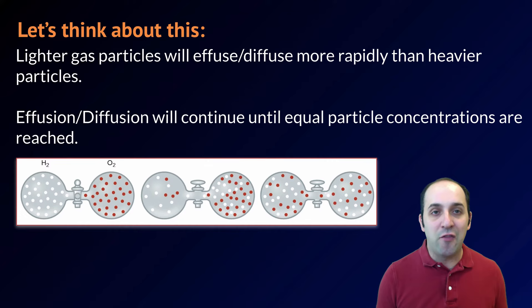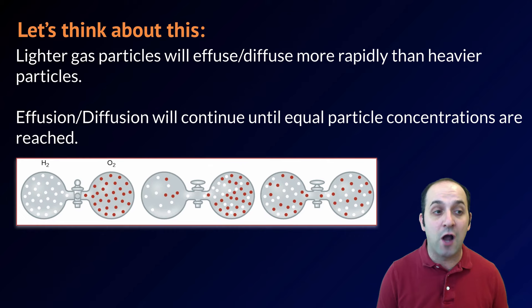Let's take a moment and think about how this works. Lighter particles are going to effuse or diffuse more rapidly than heavier particles, because they're going to move more quickly at any particular temperature through the space that they occupy. Effusion or diffusion will continue until equal particle concentrations are reached throughout the entirety of the space.